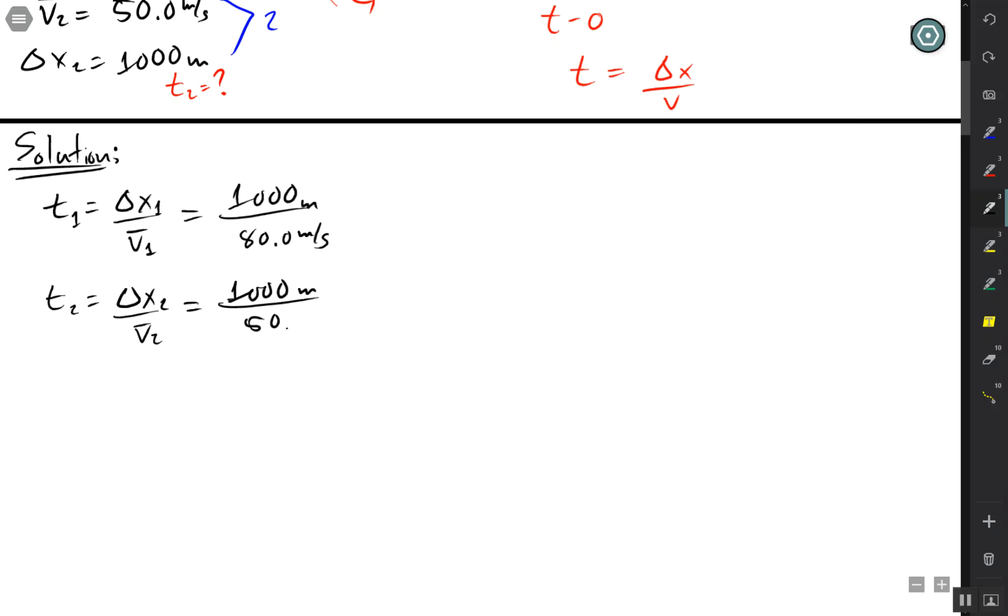Don't forget the units, because you should see that the meters cancel out and it should only be left with the units of second. We're expecting more time for t2, and sure enough this would end up being 20 seconds. 1000 divided by 50, and this would be a shorter time, so this would be 12.5 seconds.